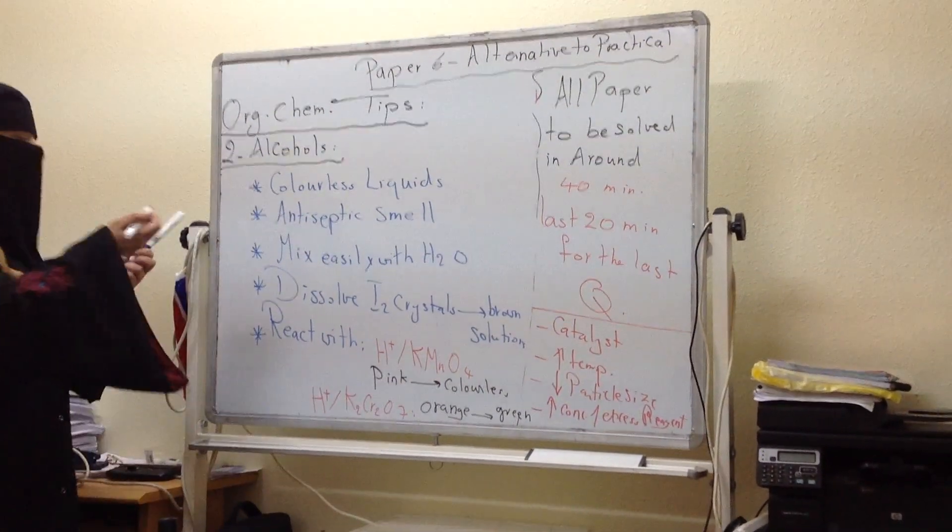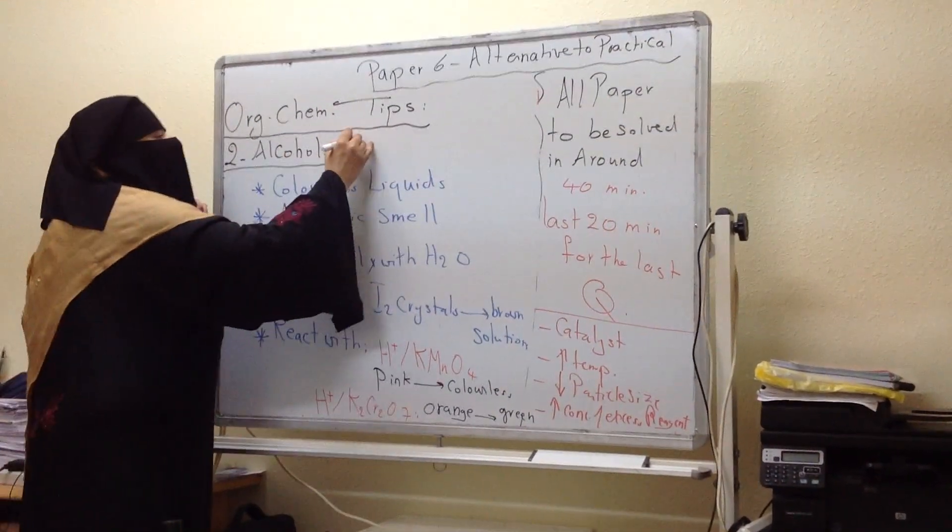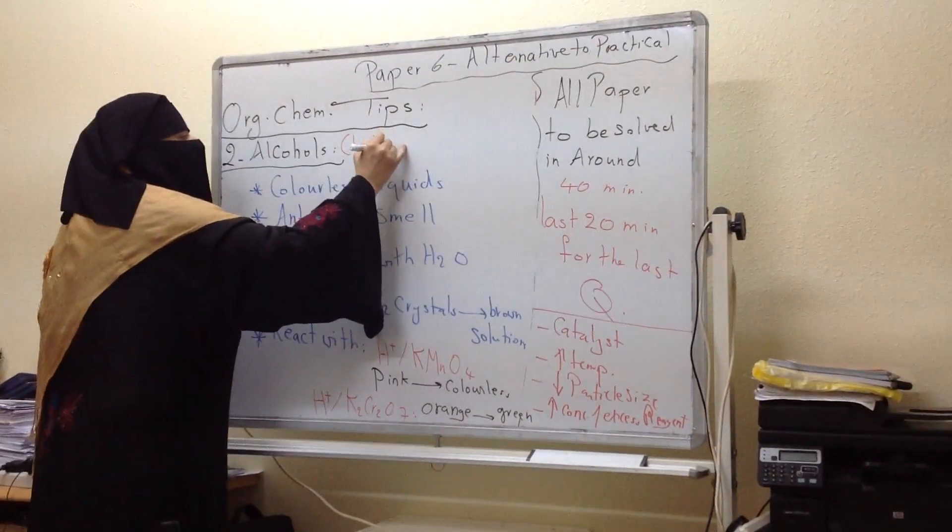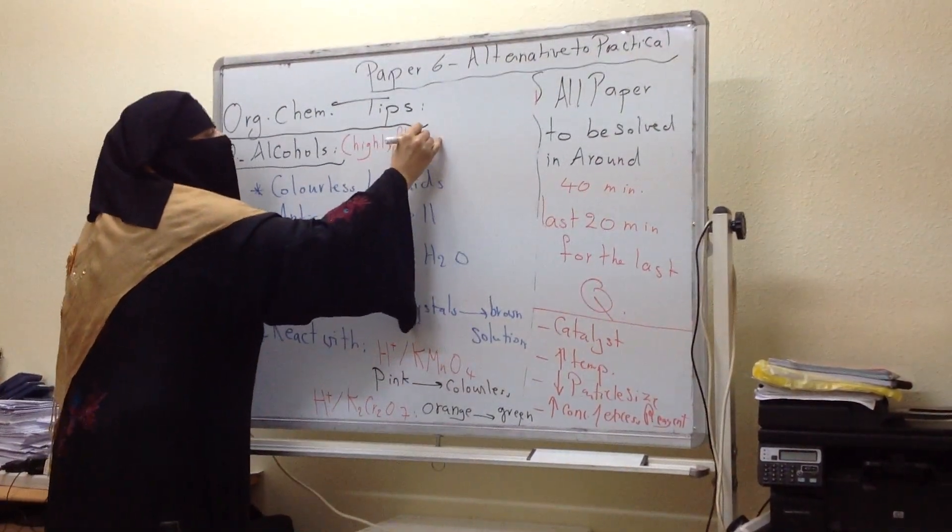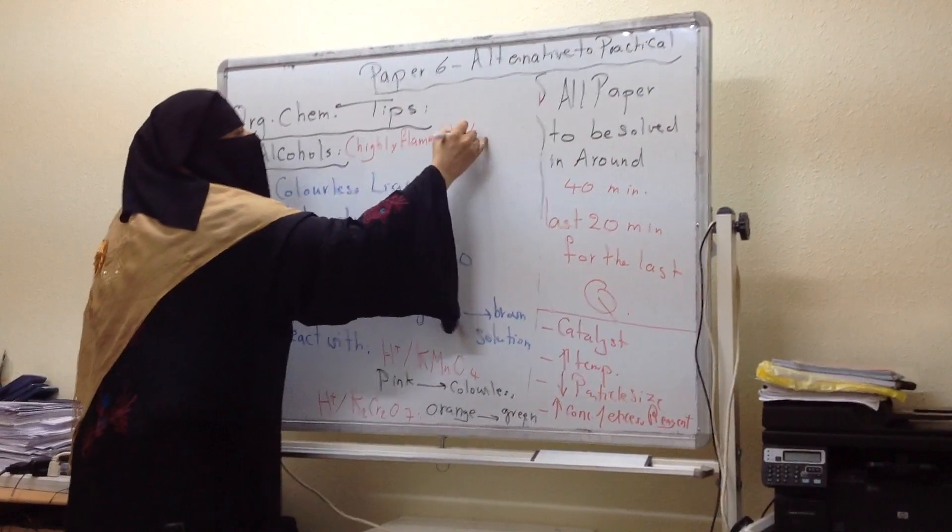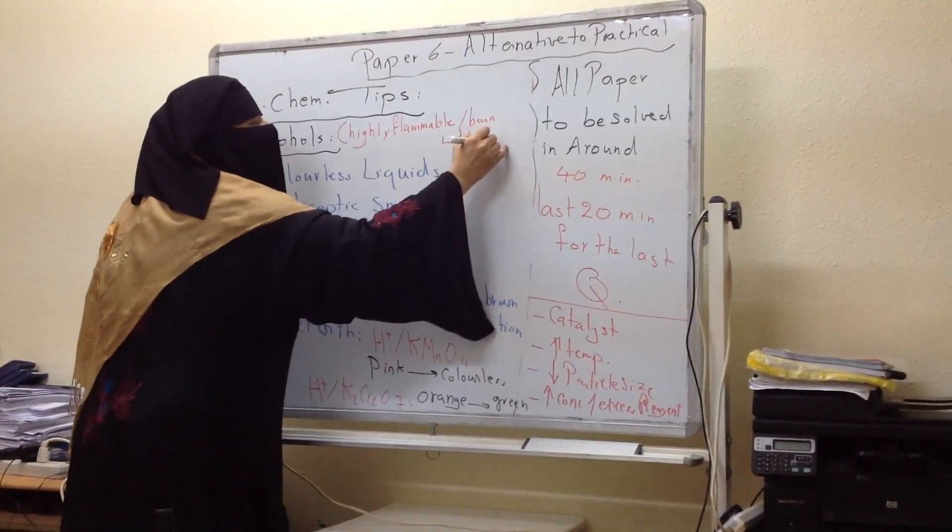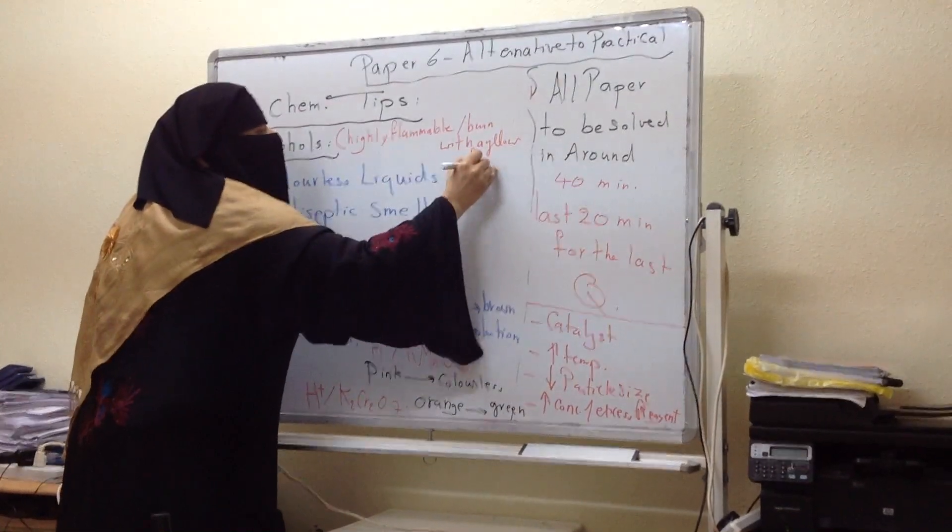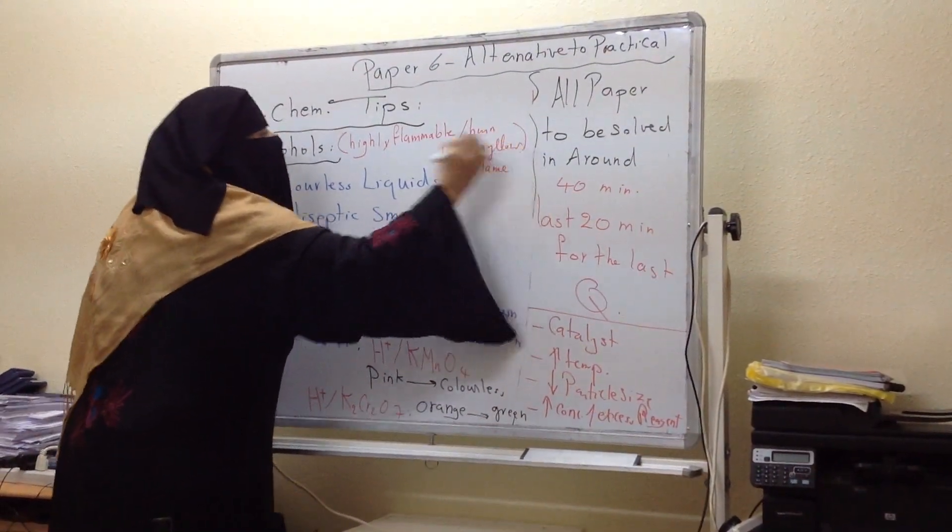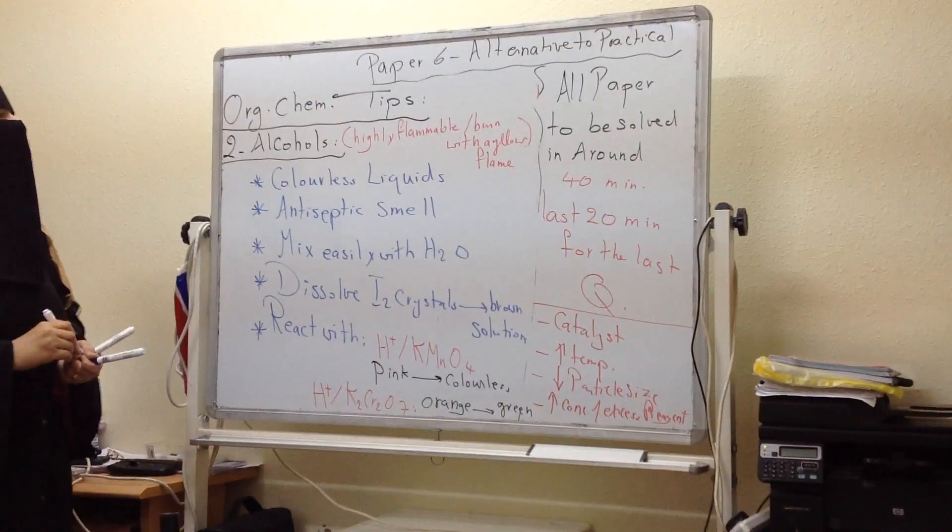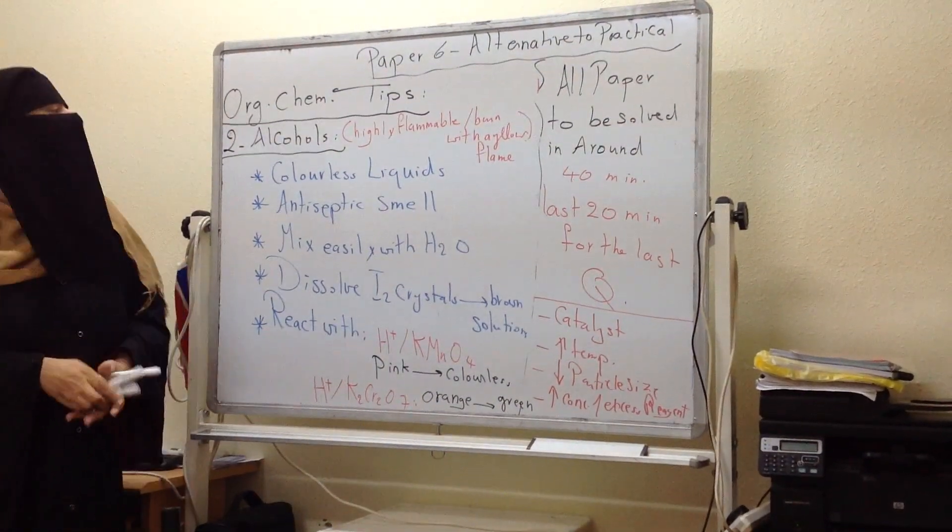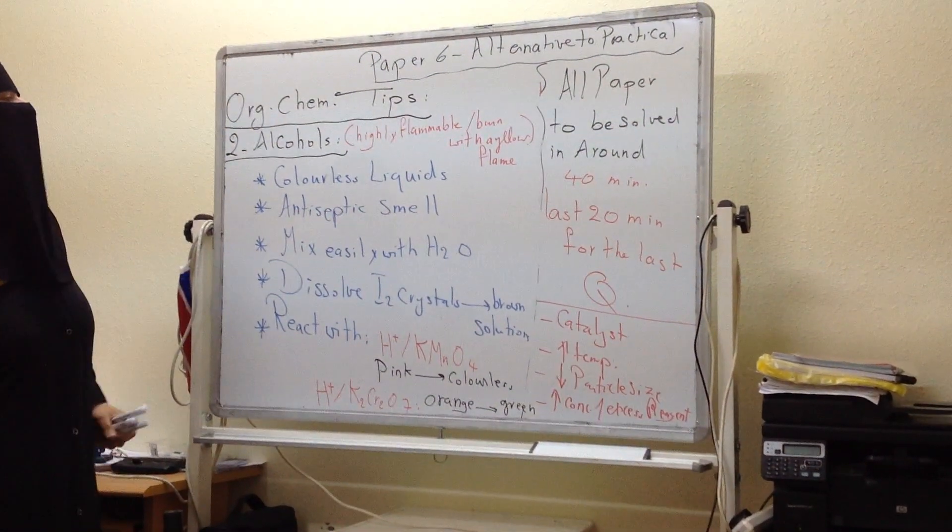Of course, alcohols are highly flammable. And when they burn, they burn with a yellow flame, not smokey flame like alkanes and alkenes. They burn without producing smoke or smokey flame like alkanes and alkenes.